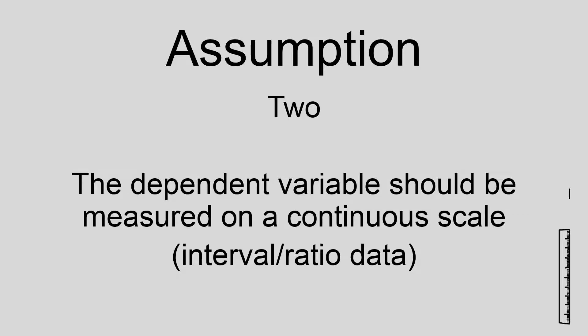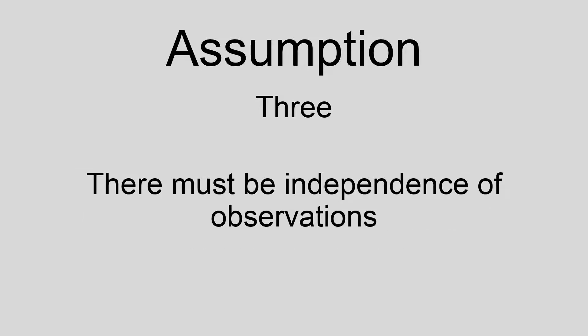Assumption three, there must be independence of observations. This simply means there must be different participants in each of your two groups.